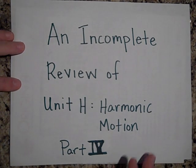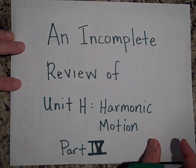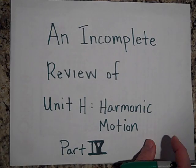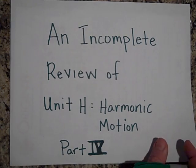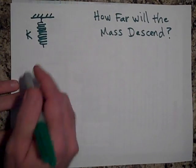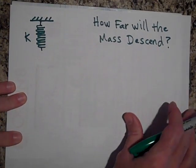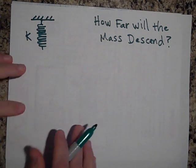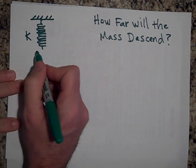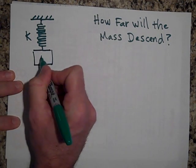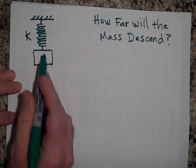Okay, here's the last part, an incomplete review of unit H part four. We've saved the toughest ones for last, so hope you're feeling up to this. The first one: here's a spring that's hanging from the ceiling, completely unstretched. I'm going to take a mass M and attach it to there.